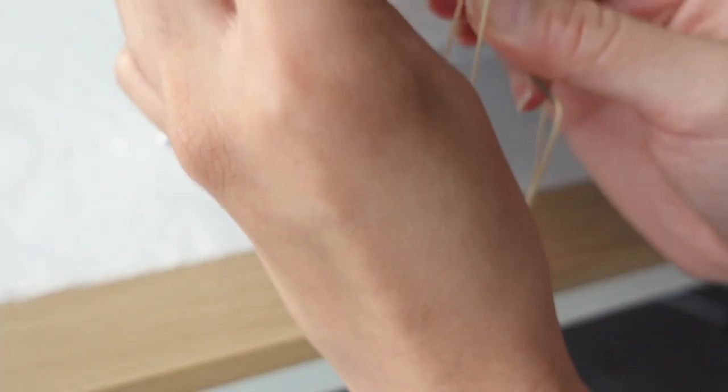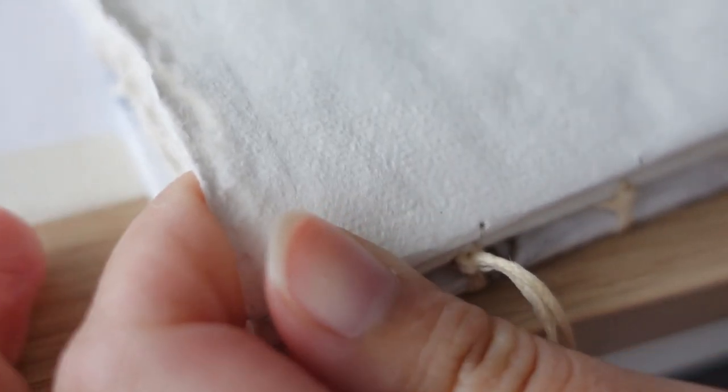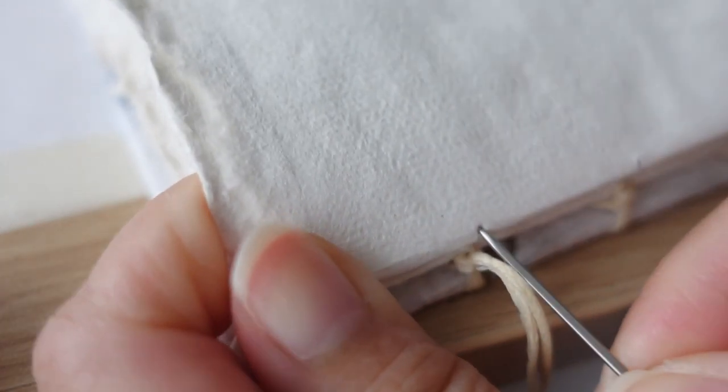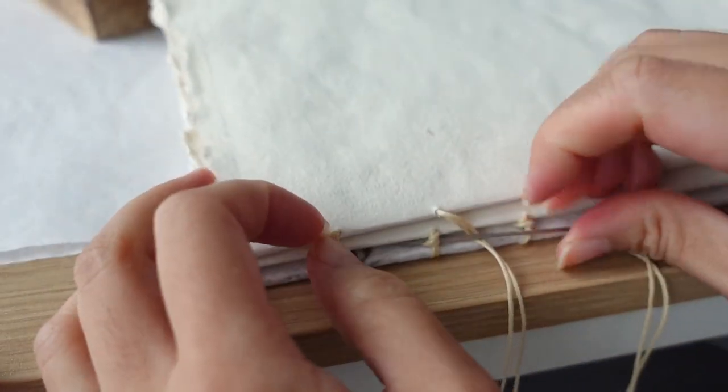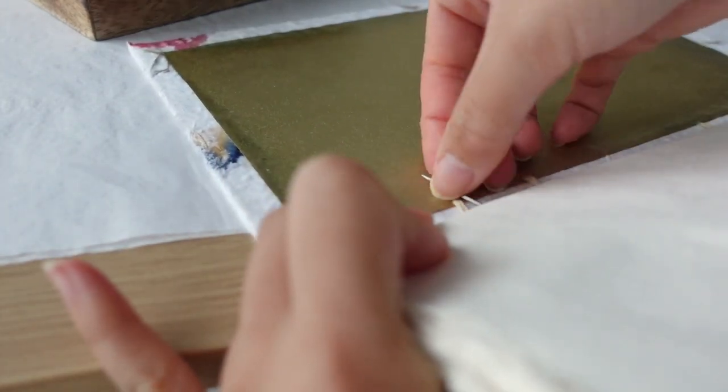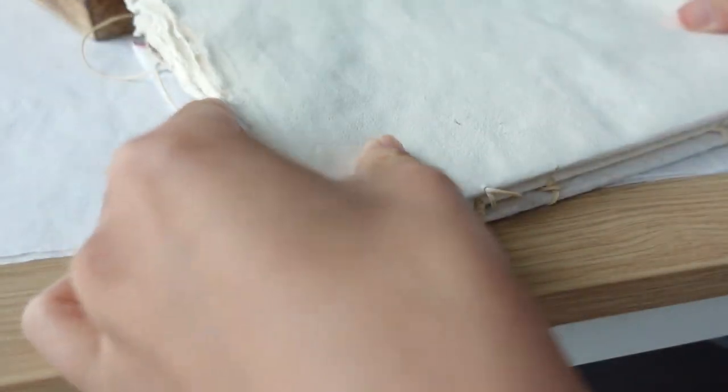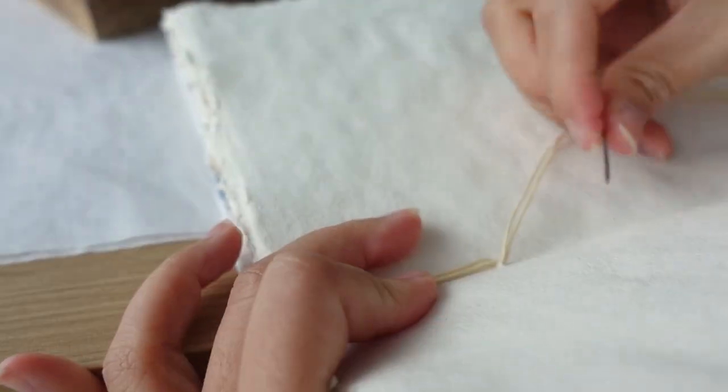Now, once you reach the last hole of your signature, you'll want to stack the next signature on top. You'll do the same stitch except after you loop it, instead of returning it back into the same hole, you'll return the needle into the next signature. And then you'll keep going. Instead of looping it through the cover, you're now looping it through the previous signature. And now you just keep going until you reach the last signature.